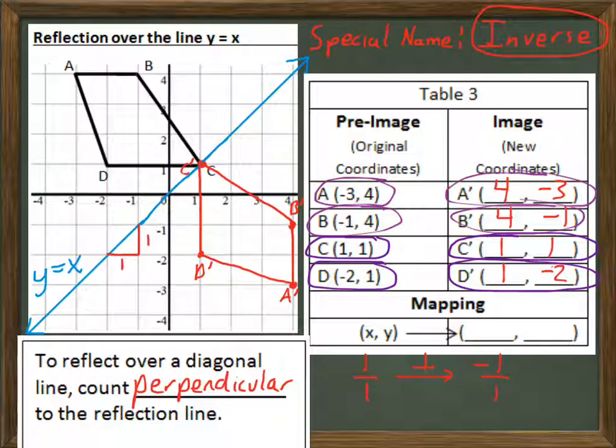So my mapping, then, would be xy changing to yx. This is a special mapping that goes with the inverse, that is, the reflection over the line y equals x. This is the one we'll mostly focus on. We could do other diagonal lines, but we're going to focus on over the line y equals x.